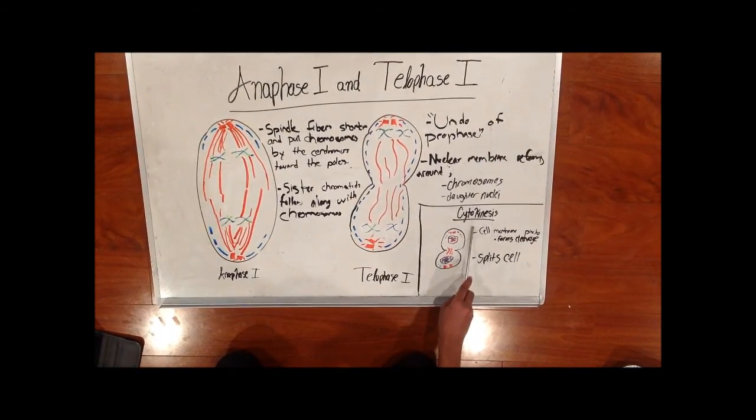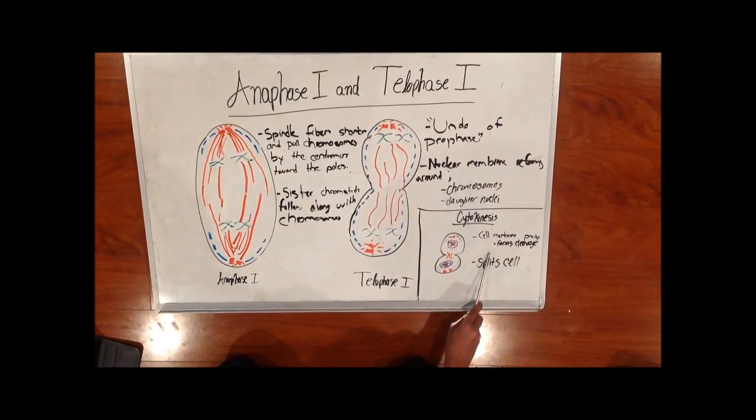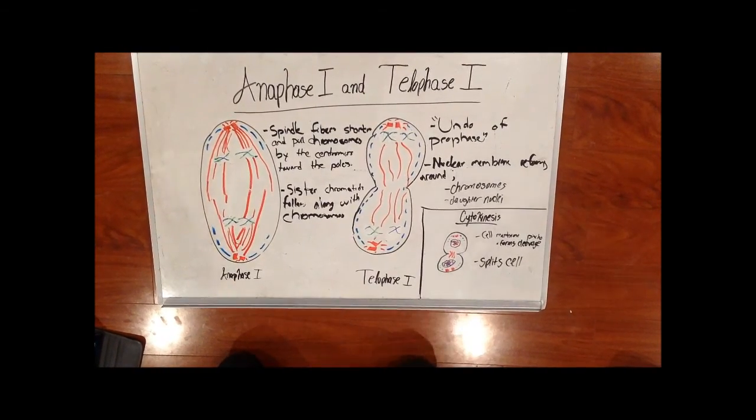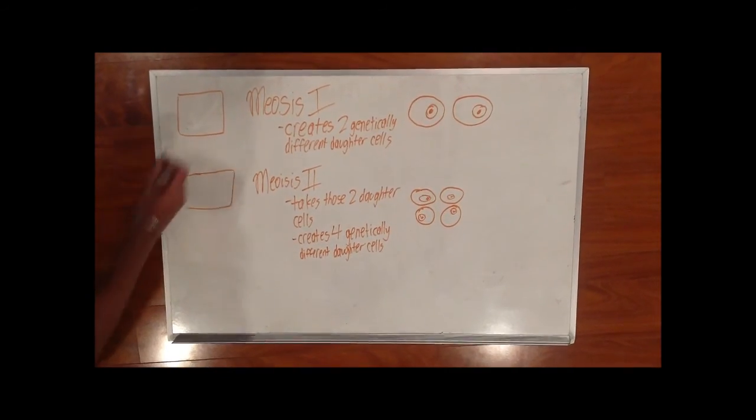Right after this, cytokinesis follows. The cell membrane pinches to form a cleavage and then splits the cell into two. Now meiosis 1 is completed.